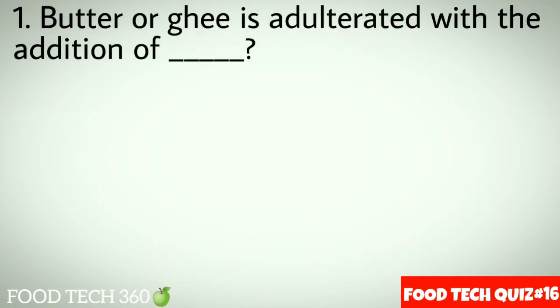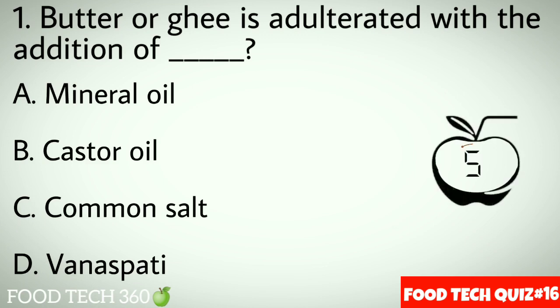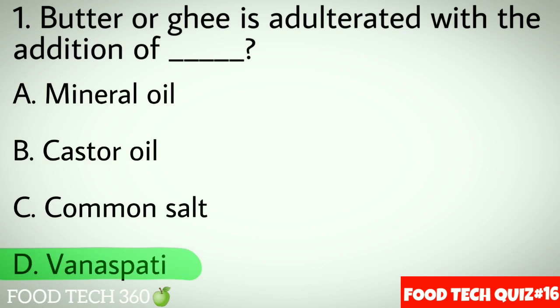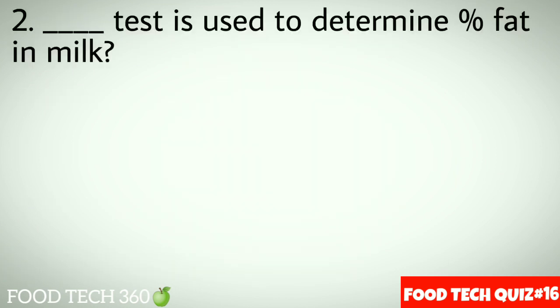Question No.1: Butter or ghee is adulterated with the addition of dash. Option A: Mineral oil. B: Castor oil. C: Common salt. D: Vanaspati. Correct answer D: Vanaspati.